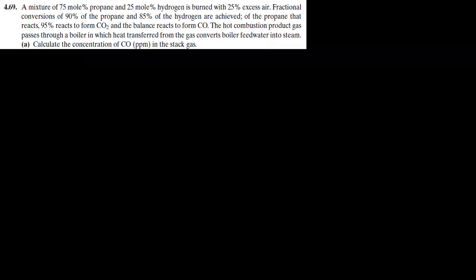The problem is 4.69. The problem states that a mixture of 75 mol% propane and 25 mol% hydrogen is burned with 25% excess air. Fractional conversions of 90% of the propane and 85% of the hydrogen are achieved.